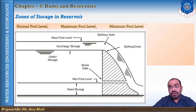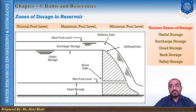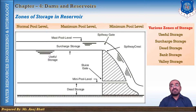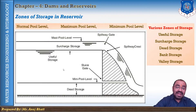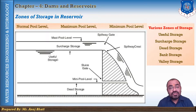Now talking about the different zones of the reservoir: we have the useful storage zone, surcharge storage, dead storage, bank storage, and valley storage. Starting with the first — the useful storage. The volume of water stored in the reservoir between the normal pool level and minimum pool level is known as the useful storage. It can be used for various purposes such as irrigation, water supply, power generation, or fishery purposes.